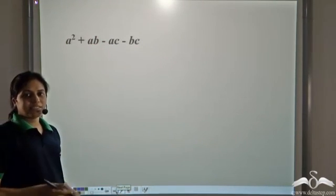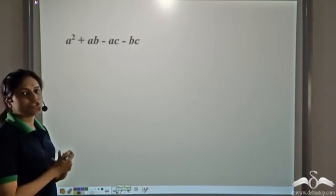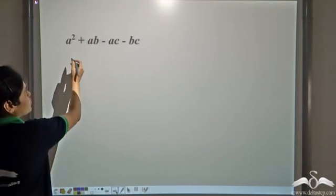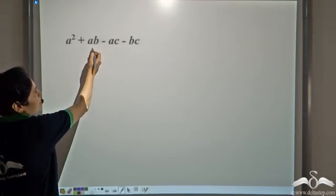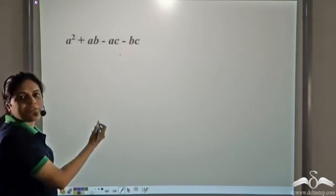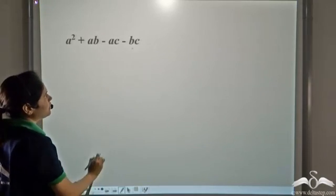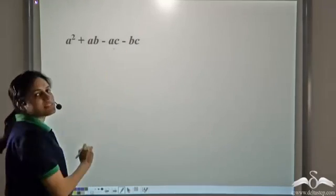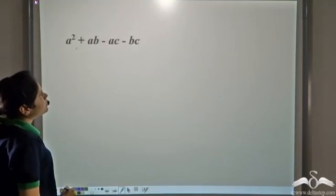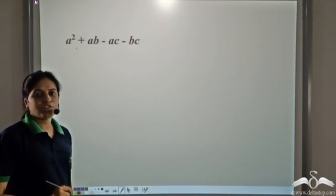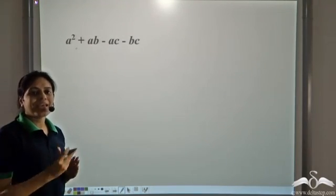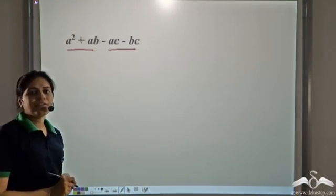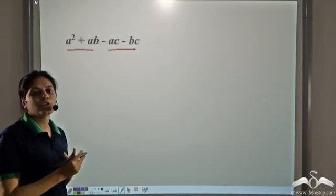Now factorize this expression. First we need to check whether there is a common factor among all the four terms. So this is a-squared, this is ab, this is ac. These three terms have a as common, but this term doesn't have an a. These two have b in common but these two don't. These two have c in common but these two don't. So there is no common factor among all four terms. The next step is to consider groups of two and see if there is a common factor among the groups.